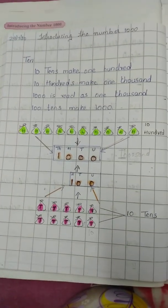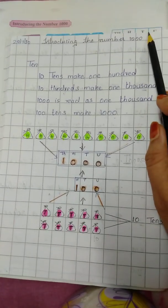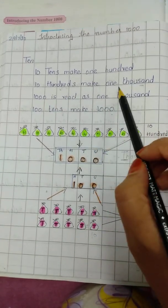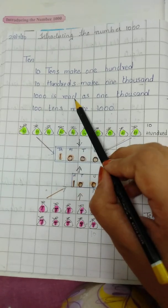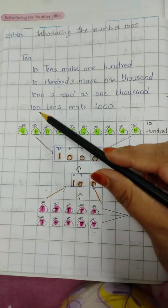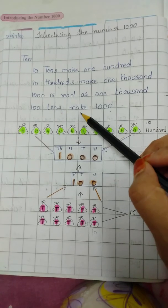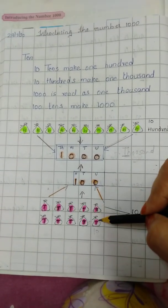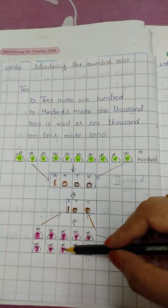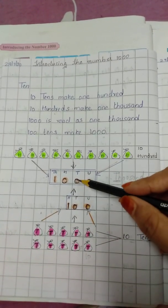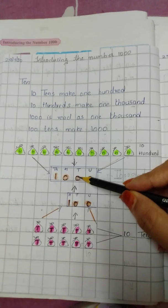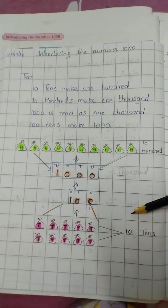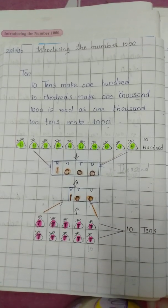Let's again revise this page. Introducing the number thousand kiya humne. Ten tens make one hundred. Ten hundreds make one thousand. Thousand is read as one thousand. And hundred tens make one thousand. Agar aap kitne tens milkar one thousand bana sakte hain, that is hundred tens can make one thousand. Yeh humne kiya aaj, thousand number hai, uska reading. Okay?